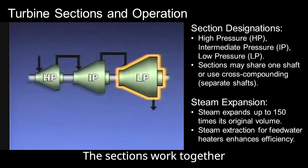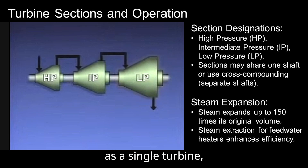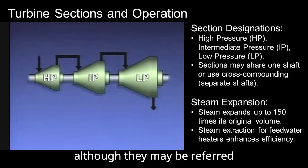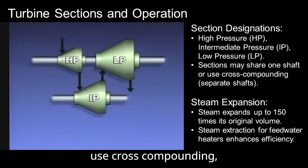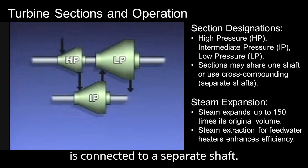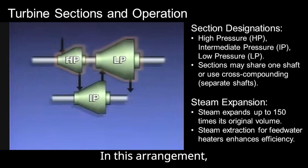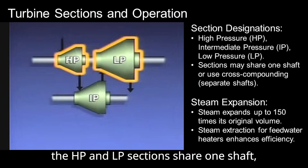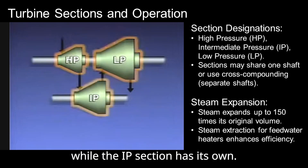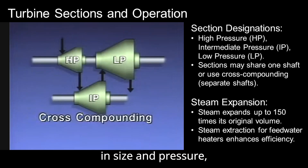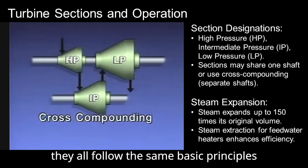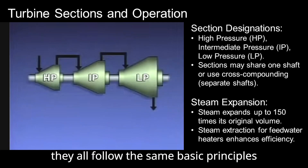The sections work together as a single turbine, although they may be referred to individually. Some turbine designs use cross-compounding, where each section is connected to a separate shaft. In this arrangement, the HP and LP sections share one shaft, while the IP section has its own. Although the sections differ in size and pressure, they all follow the same basic principles of operation.